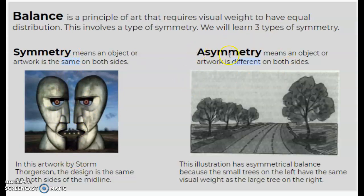Asymmetry means it's different on both sides, but it can still have balance if one side, like this giant tree, is balanced out by something else on the other side. So the visual weight that I'm talking about is one big tree equals four little trees or something like that. So if it's different on both sides it could still be balanced.